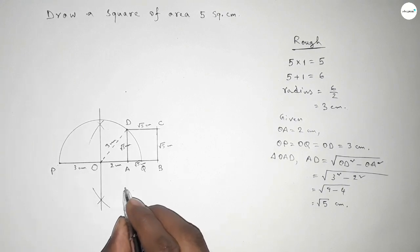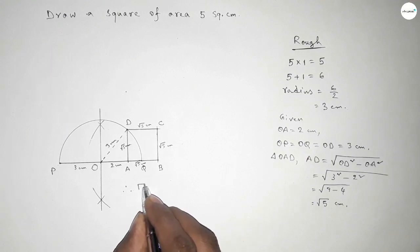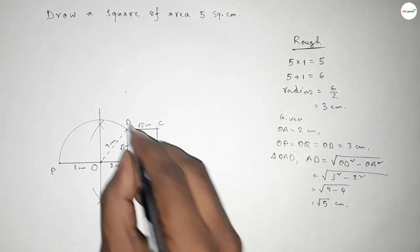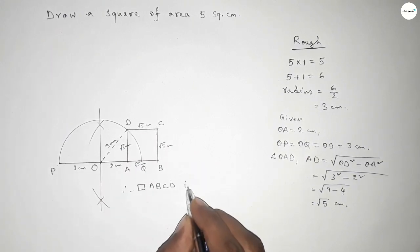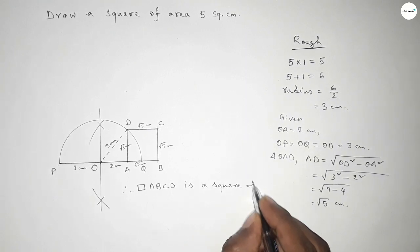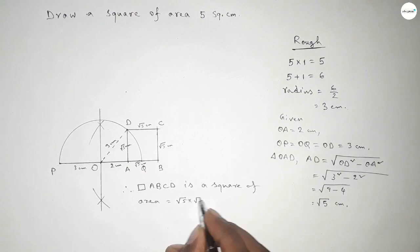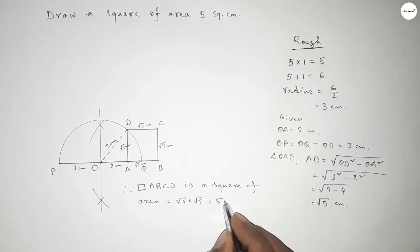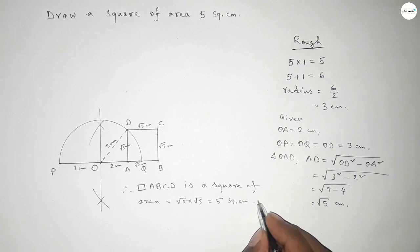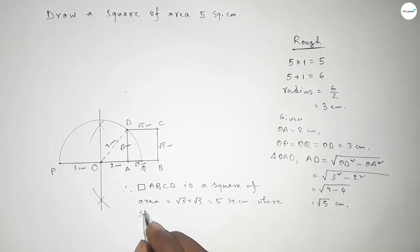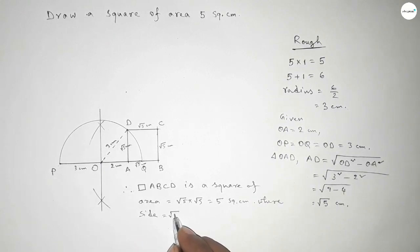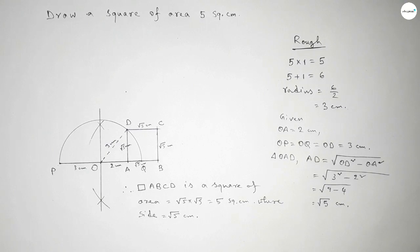Therefore, rectangle ABCD is a square of area equal to root 5 into root 5, equal to 5 square centimeters, where each side equals root 5 centimeters. That's all. Thanks for watching. If this video is helpful to you, please share it with your friends. Thanks for watching.